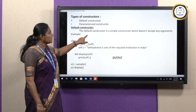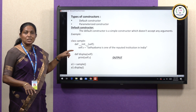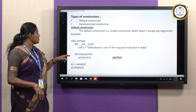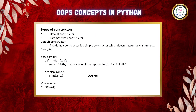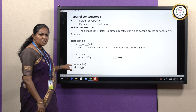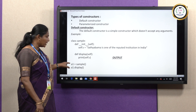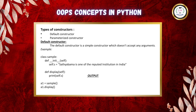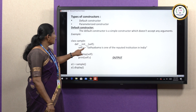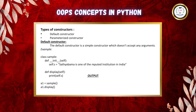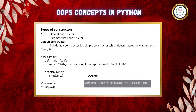The default constructor is a simple constructor which does not accept any values from the user. For example, in class sample we have two methods: __init__ is the constructor method, and display is the class method. Every Python program starts with the main method. In the main method, we create the object A1. At the time of object creation, the constructor function is automatically invoked. I assigned the string 'Satyabhama is one of the reputed institutions in India' to variable yes, then we call the function display and the output will be shown.